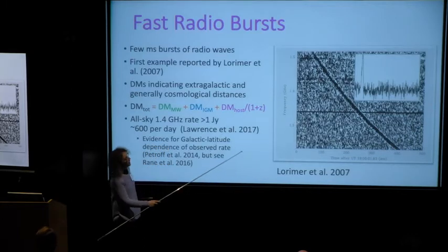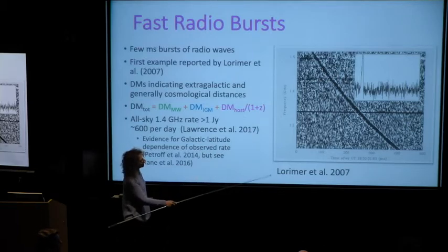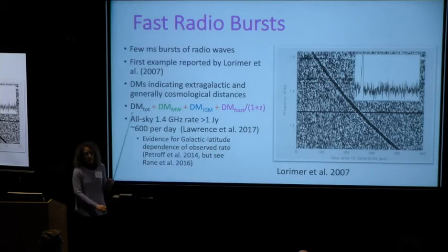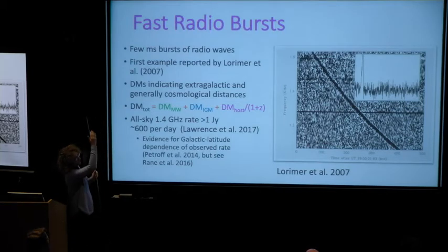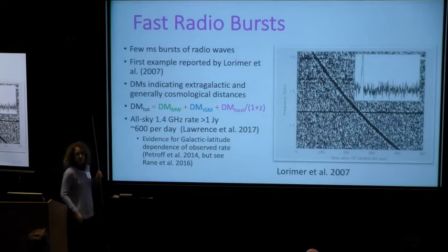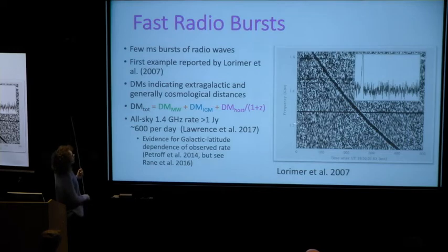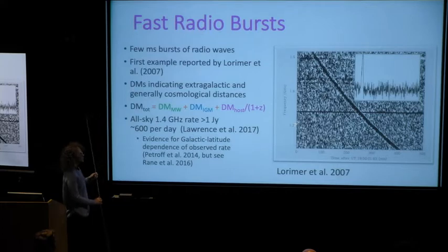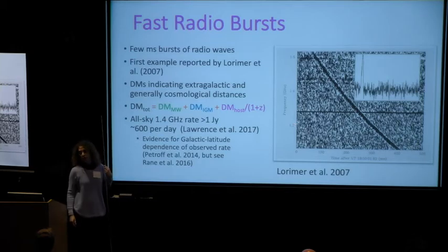That fixed-frequency line is some TV station or interference. When you correct for the dispersion, you get the inset — a burst of radio waves that appears and then disappears, and that source has not been seen again. The dispersion measure, the size of that sweep, tells us that these fast radio bursts are extragalactic, because the DM value is much greater than anything the galaxy could provide.